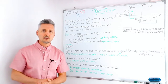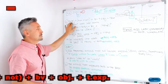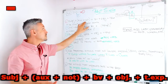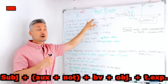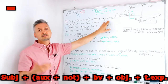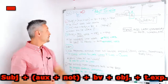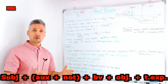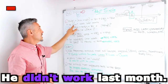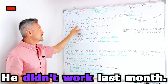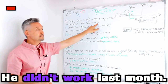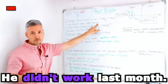Let's look at the formulas. For a negative sentence, we have: subject, then the auxiliary plus 'not,' then the base of the verb, then the object, and then the time expression if any. An example: 'He didn't' — that is, 'he did not' — 'work' (base of the verb 'to work') 'last month.' Easy.